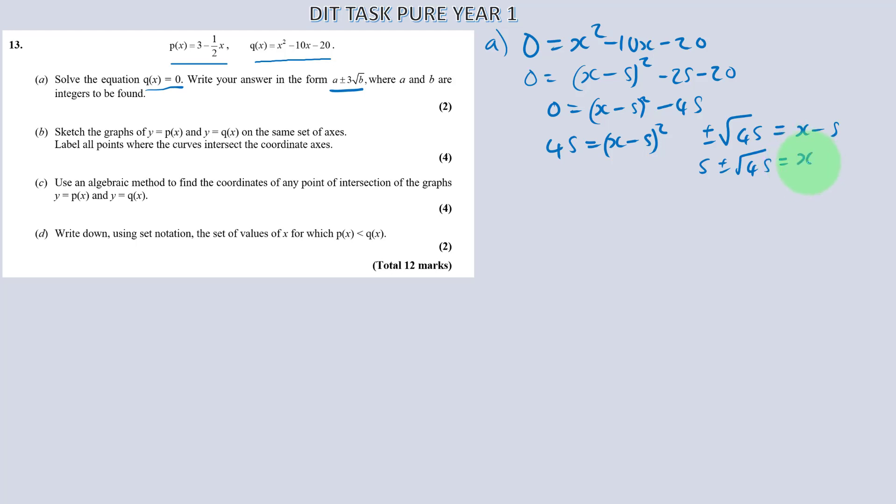Root 45 is root 9 times root 5. So that's 3 root 5. So that gets us in that form. So the answer is 5 plus or minus 3 root 5 equals x. So a equals 5 and b equals 5. That's method and answer mark. That should not be too challenging.